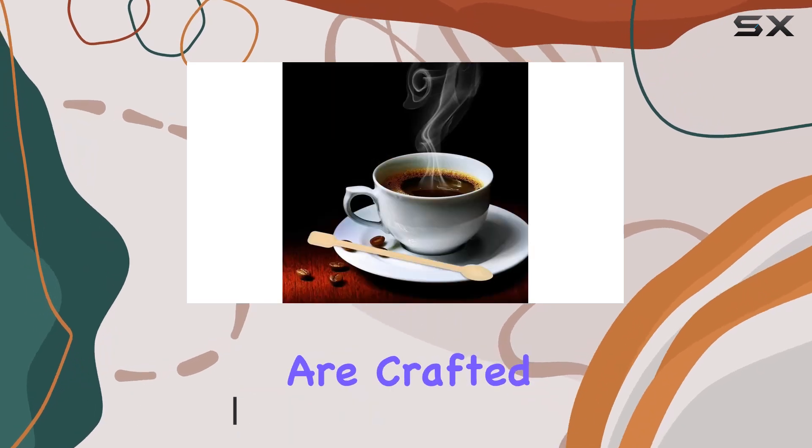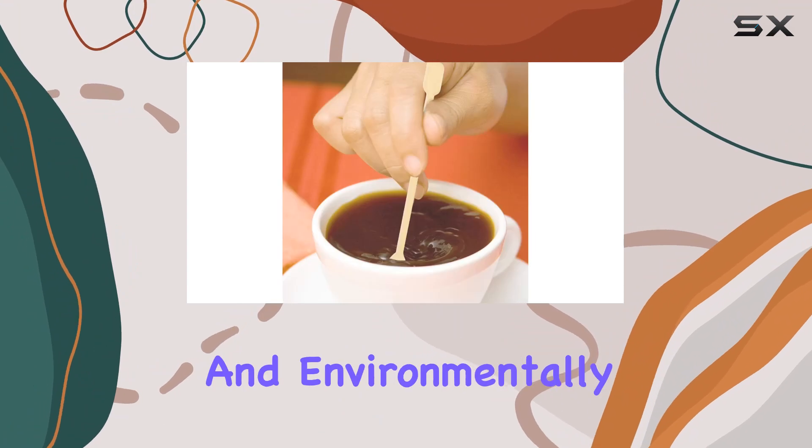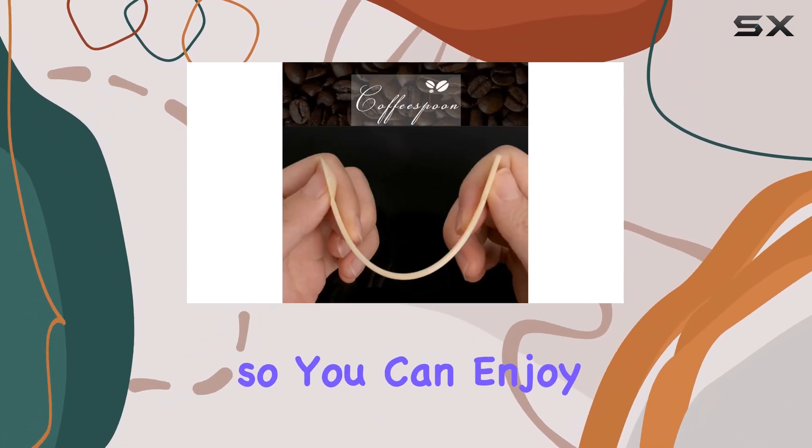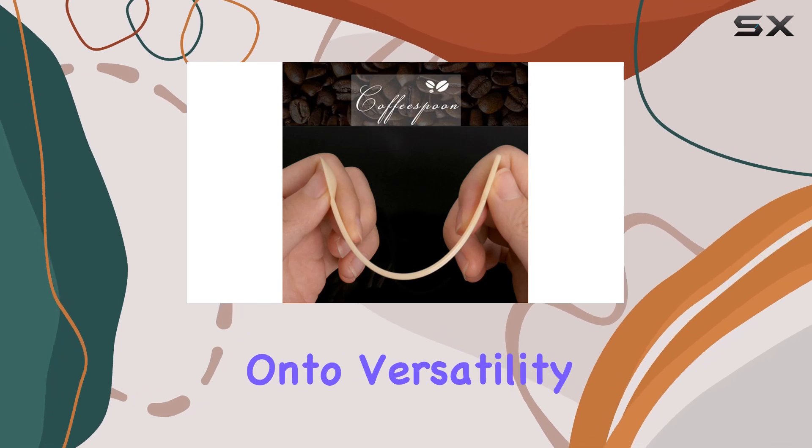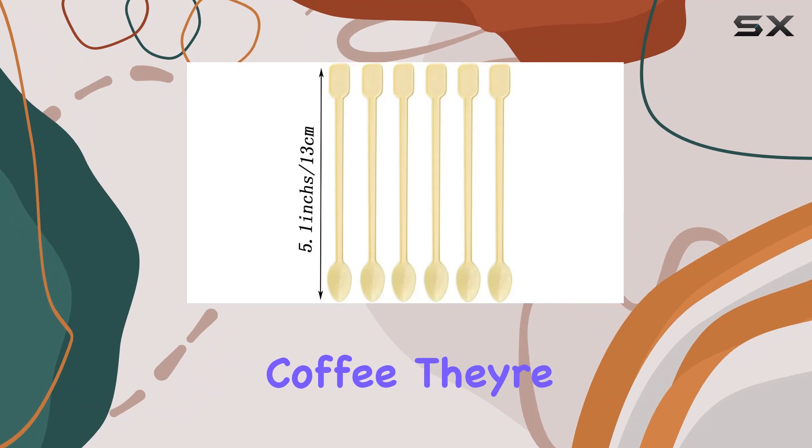These stir sticks are crafted from high-quality food-grade plastic, ensuring they're healthy, safe, and environmentally friendly. Plus, they're degradable, so you can enjoy your beverage guilt-free. Now onto versatility—these spoons aren't just for stirring coffee; they're perfect for yogurt, jams, condiments, and even snacks.